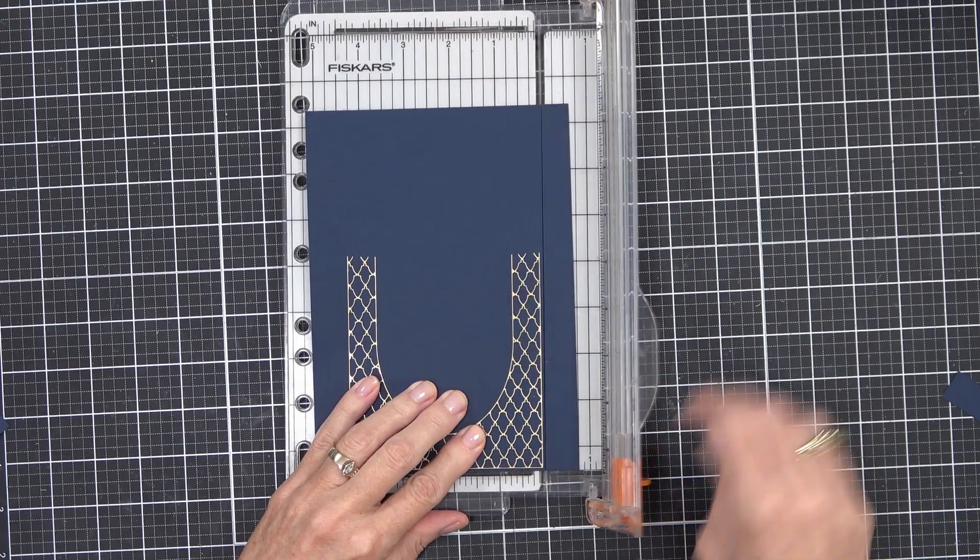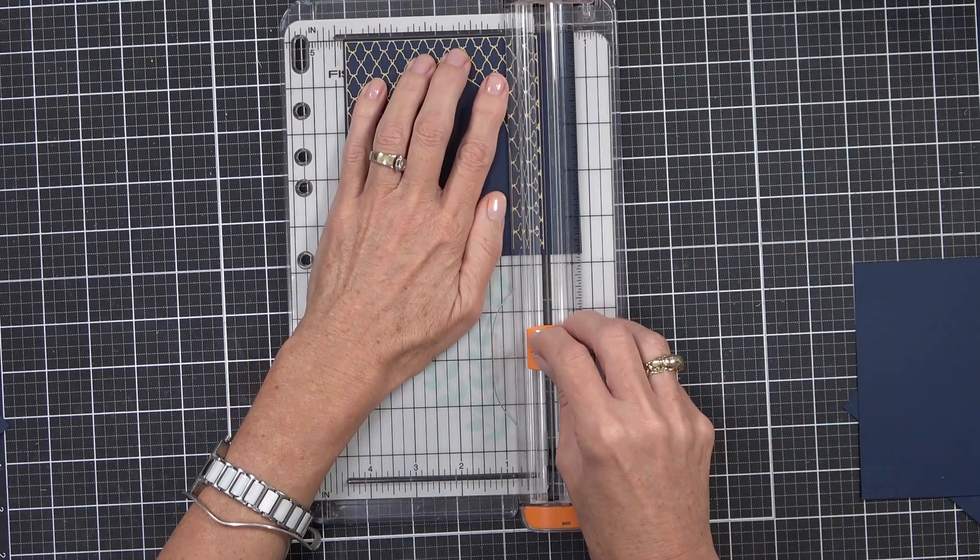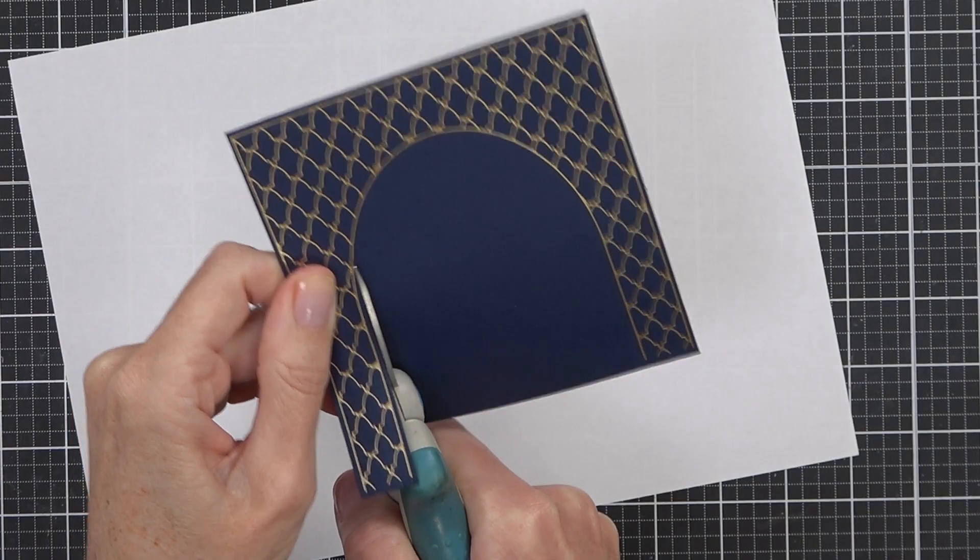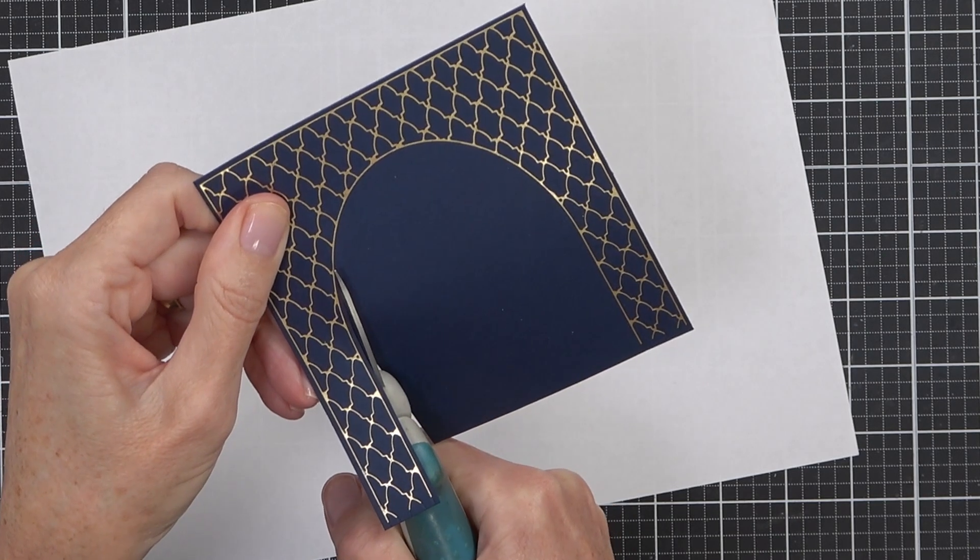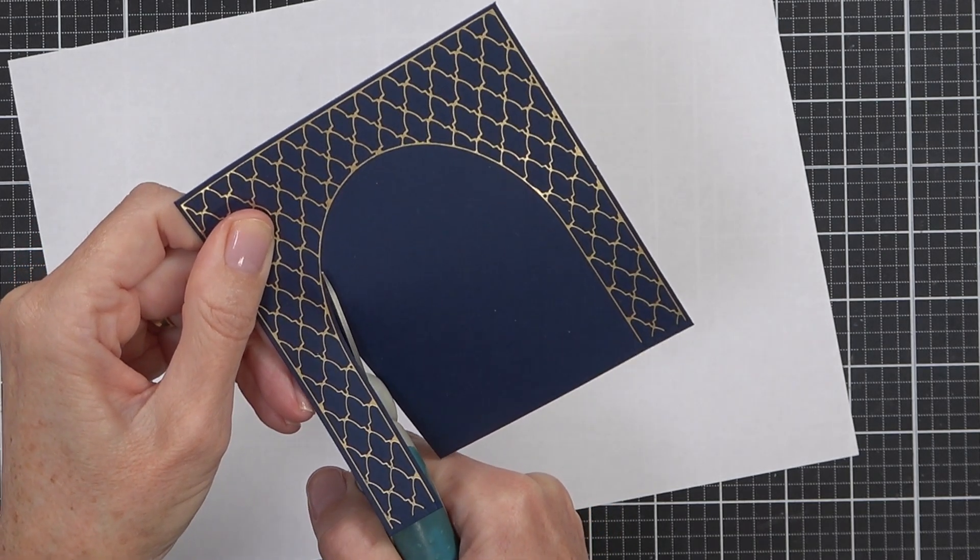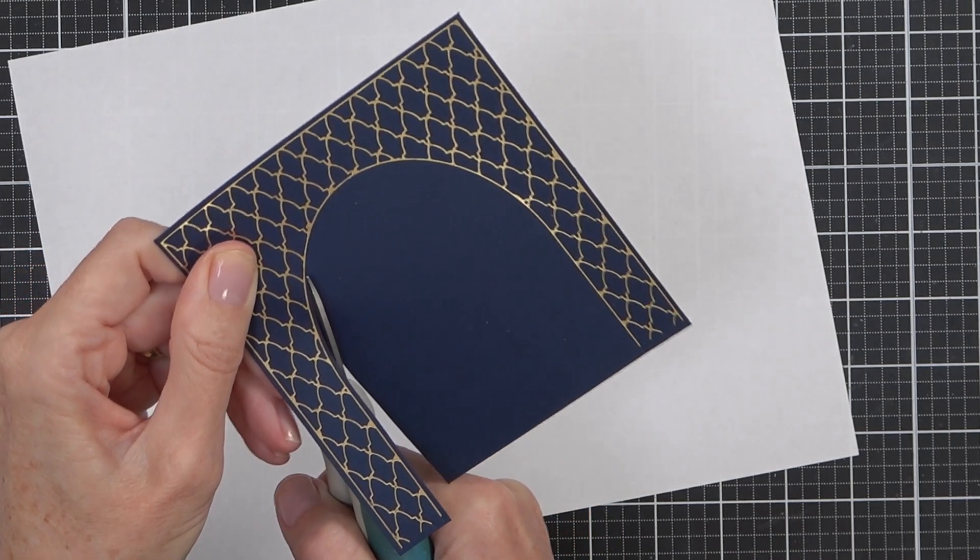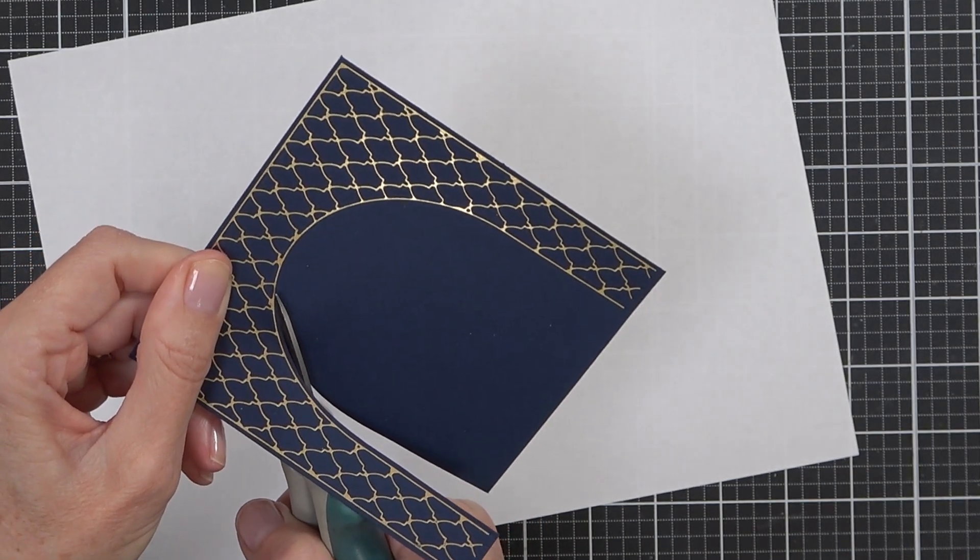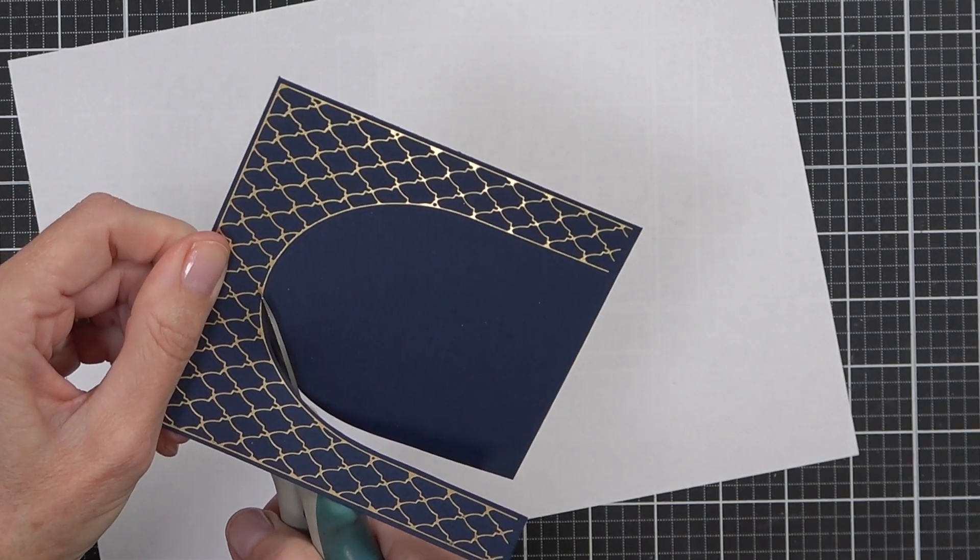So to create my window I actually hot foiled this same image twice and I used my trimmer to neaten up and cut down the edges. To create the window, I just used a pair of scissors and I fussy cut around the inside portion of both of my hot foiled images.